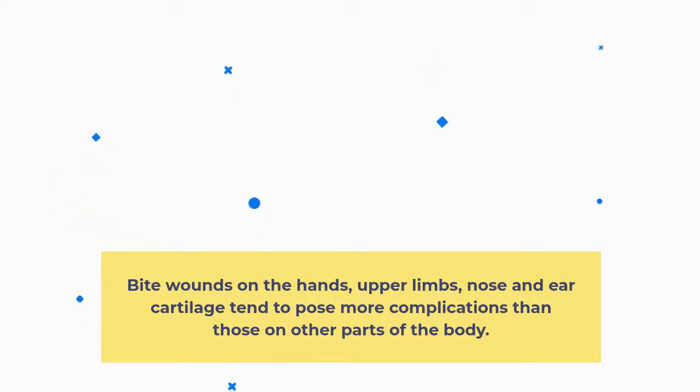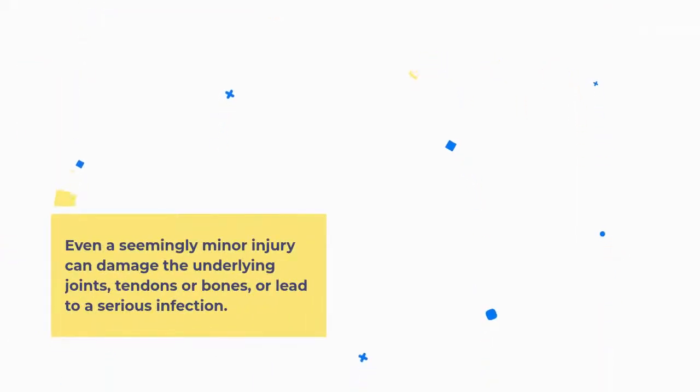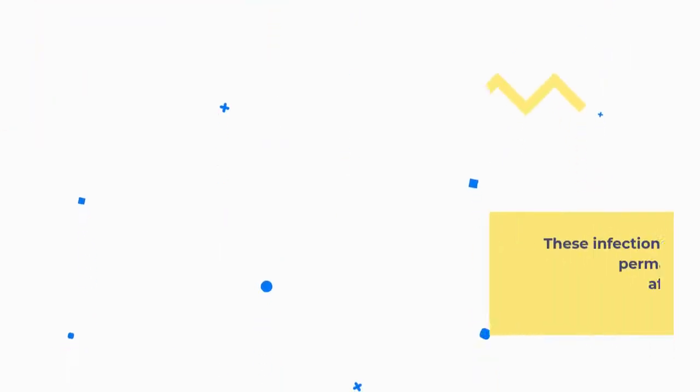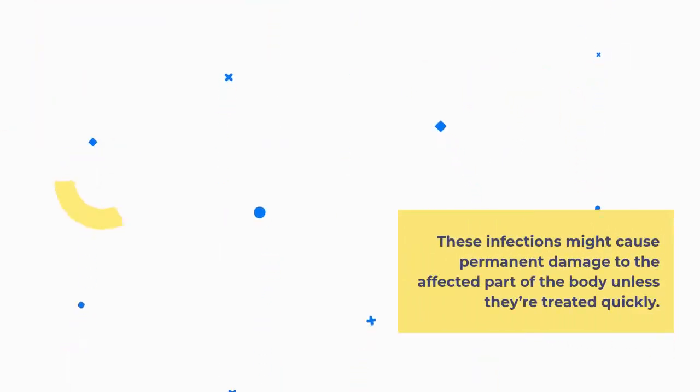Bite wounds on the hands, upper limbs, nose and ear cartilage tend to pose more complications than those on other parts of the body. Even a seemingly minor injury can damage the underlying joints, tendons or bones, or lead to a serious infection. These infections might cause permanent damage to the affected part of the body unless they're treated quickly.